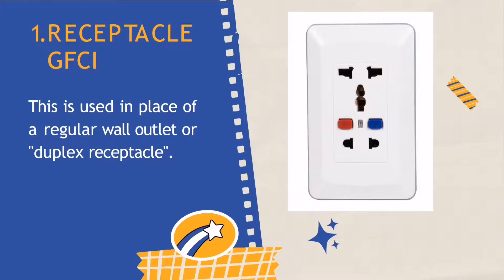Modern homes use Receptacle-type GFCI that will protect other electrical outlets connected on the branch circuit. This GFCI is integrated in the electrical outlet and constantly tracks the current flowing in a circuit to sense fluctuation in real-time. It has three holes — two of the holes are for neutral and hot wire, and the third hole in the middle serves as a ground wire. If it detects any change in the electrical flow in the circuit, it will immediately cut off the flow of electricity. For instance, if you are using a hairdryer and it slips into a sink filled with water, the GFCI outlet will immediately sense the interruption and cut the power to ensure electrical safety.